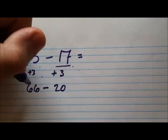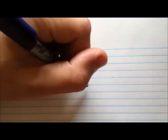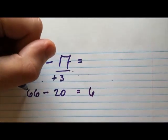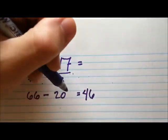$66 minus $20 is a lot easier to do. $6 minus $0 is $6. And then we can do our tens. $6 minus $2 is $4.